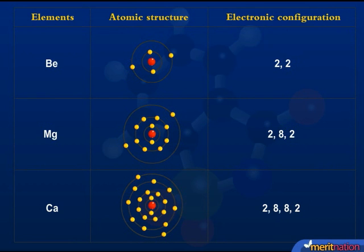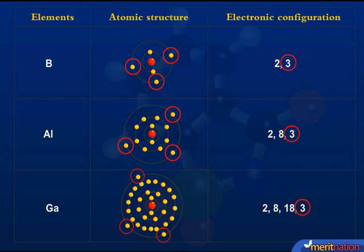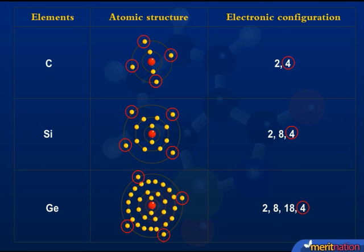Similarly, the elements of the alkaline earth metal group have 2 electrons in their valence shell and are kept in group 2. The elements of boron family have 3 valence electrons and the elements of carbon family have 4 valence electrons. And that is the reason these are kept in groups 3 and 4 of the modern periodic table.